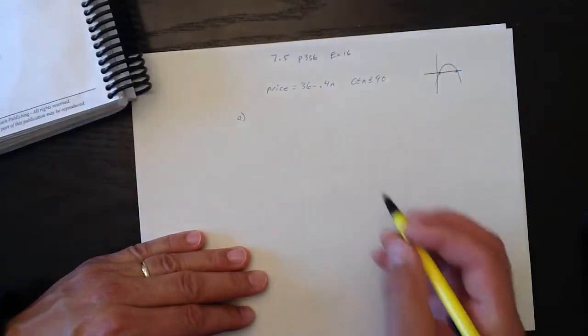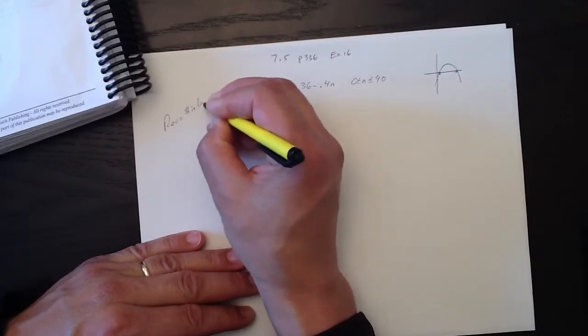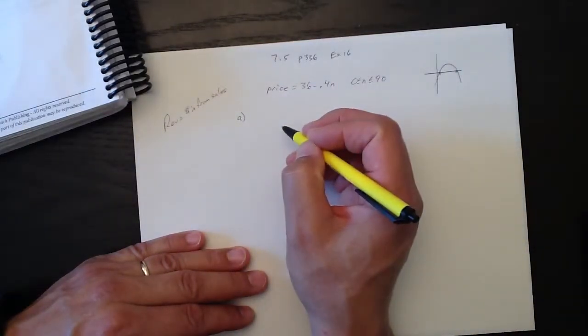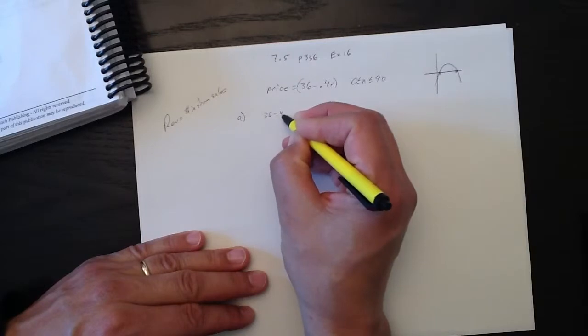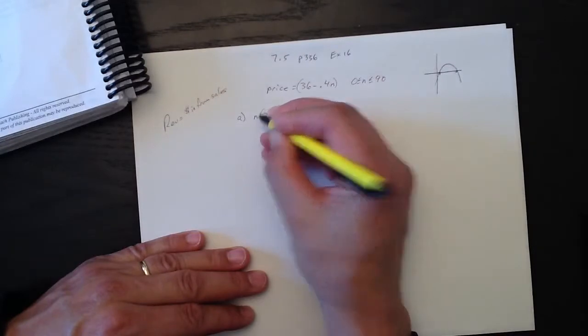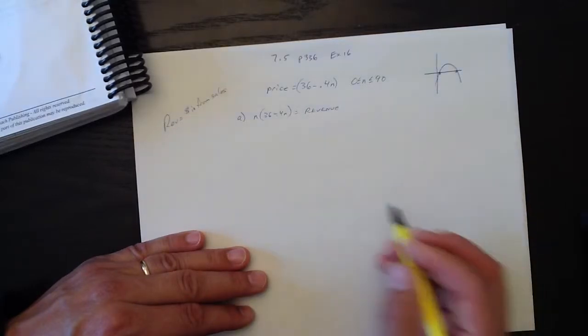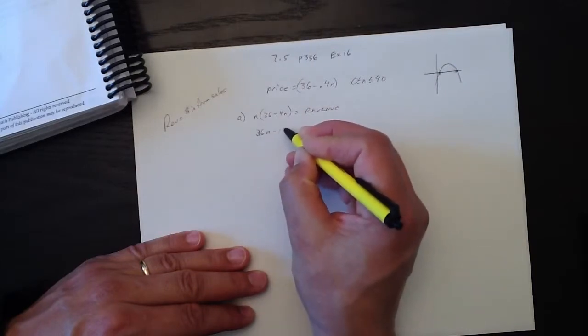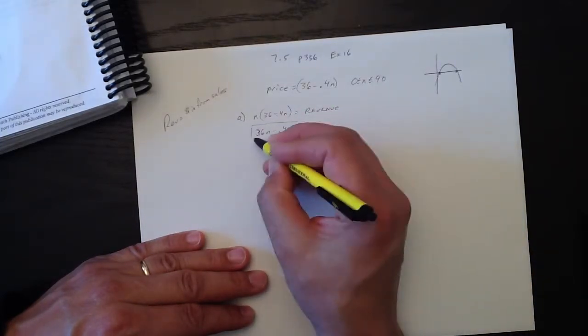For part a, revenue equals money in from sales. The revenue function then, price as we know is this stuff here. So if we take the price and multiply it by the number of units sold, which is n, that gives us revenue. I'm going to multiply this through, and I've got 36n minus 0.4n squared. That's our revenue function.